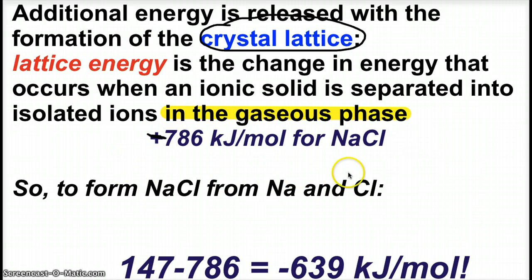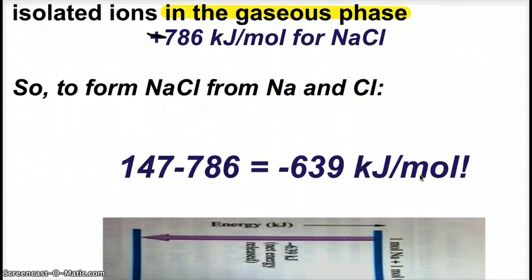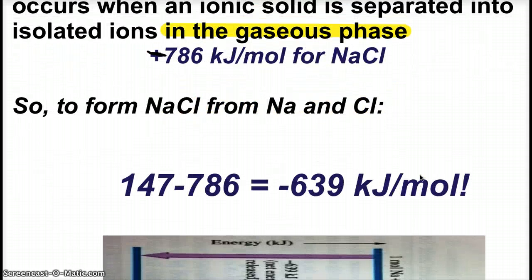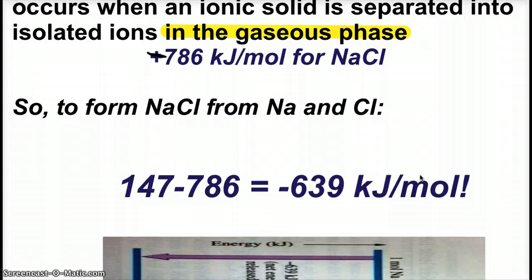So, in order to form sodium chloride from sodium and chlorine atoms, overall, it's going to be a negative 639 kilojoules per mole experience. The 147 that we invest, and then the 786 that we get back from forming the crystal lattice.